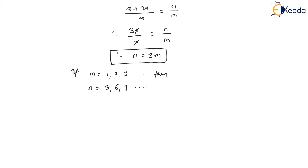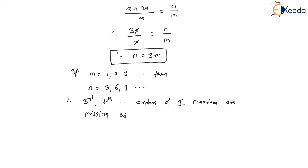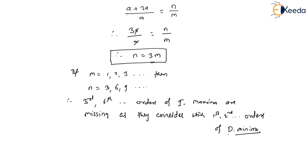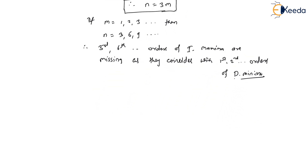Therefore the 3rd, 6th, and 9th orders of interference maxima are missing from the pattern because they coincide with the 1st, 2nd, and so on orders of diffraction minima. This concludes the second condition.